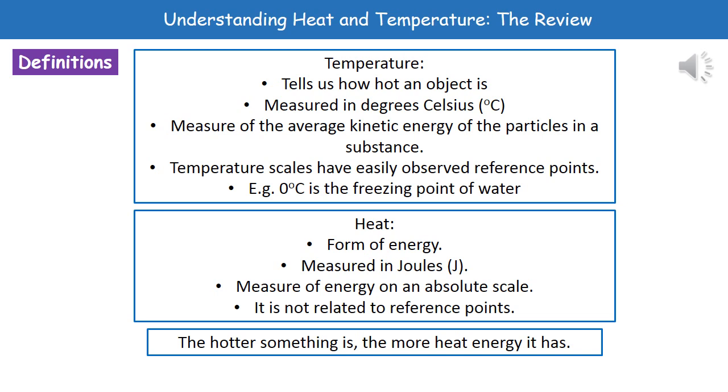So what we've actually done as scientists is we've given them some easily observed reference points. So we'd have things like 0 degrees Celsius is the freezing point of water, 100 degrees Celsius is the boiling point of water. So it makes it an easier scale for us to work with.